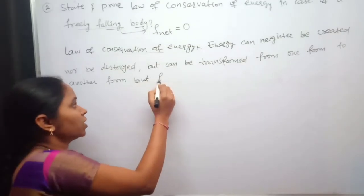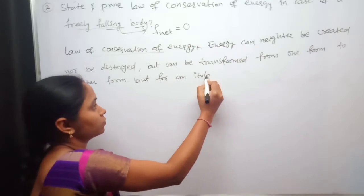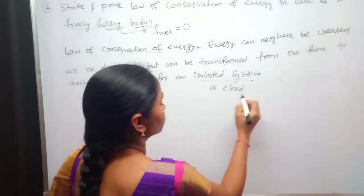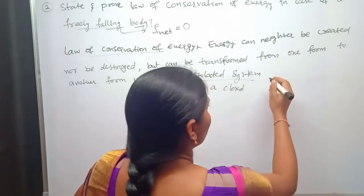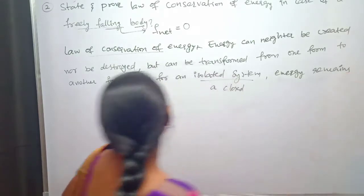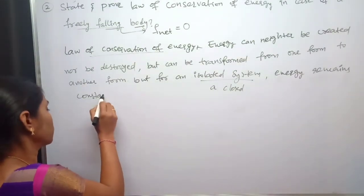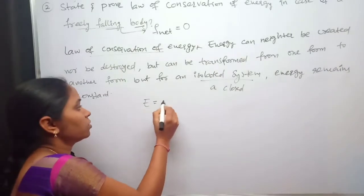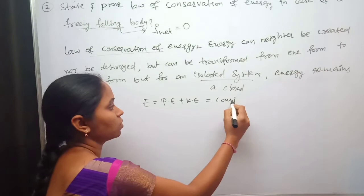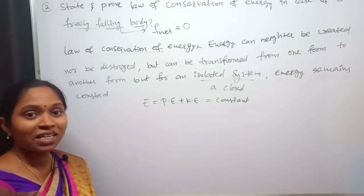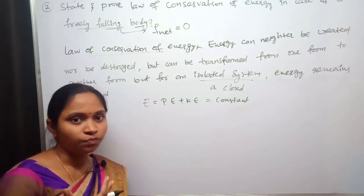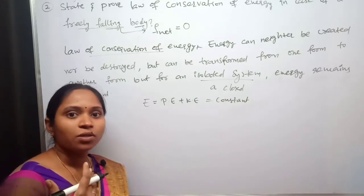But for an isolated system — a closed system — energy remains constant. The total energy, which is the sum of potential energy and kinetic energy, always remains constant. One more example: the energy of the universe. If you assume the universe is an isolated system, then the total energy of the universe remains constant.